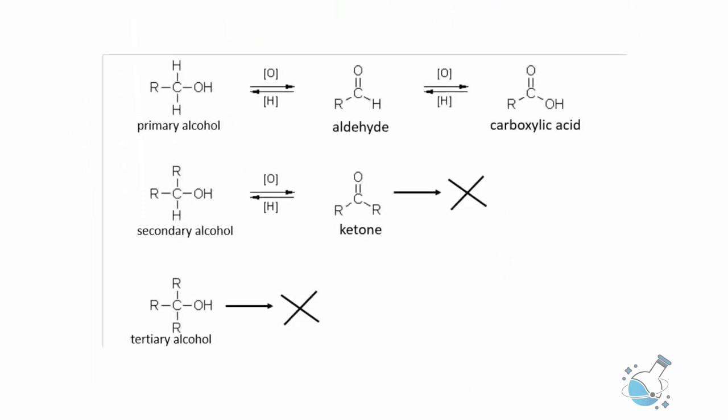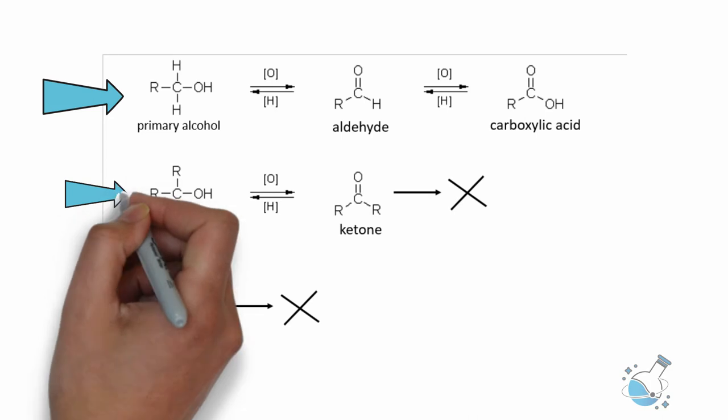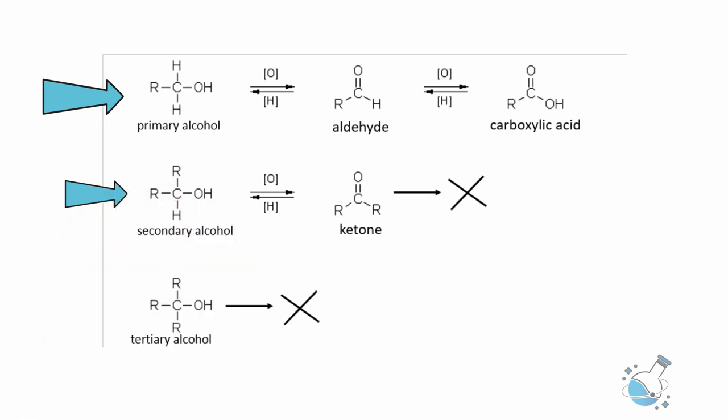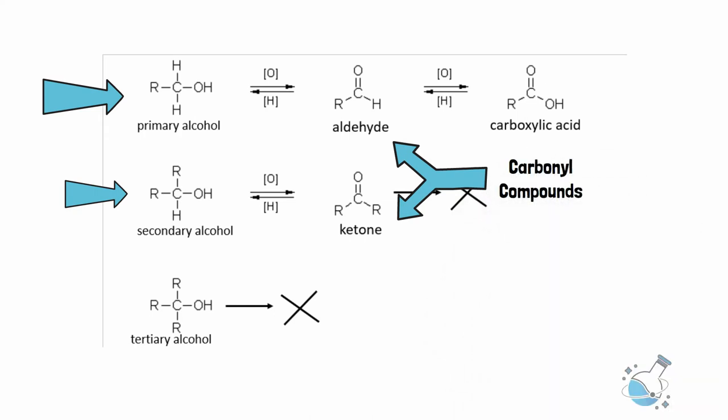Primary alcohol can be directly converted into carboxylic acid by strong oxidation. Secondary alcohol has only one alpha hydrogen, which it can lose to form a ketone. Aldehydes and ketones are known as carbonyl compounds, as both of them possess the carbonyl group in their structural formula.